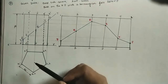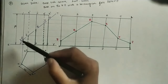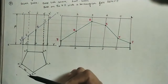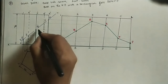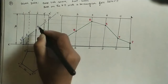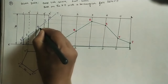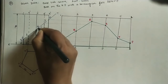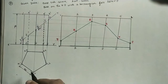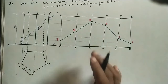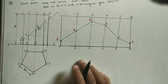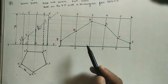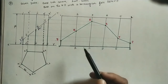Mark the given dimensions: base side is 30 mm and axis height is 70 mm. Mark the 45-degree angle with arrows on both sides. The entire diagram should be done in pencil — do not use pens or sketch pens. For clarity in this demonstration, different colors are used.